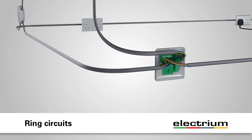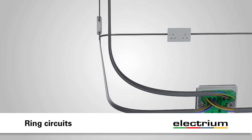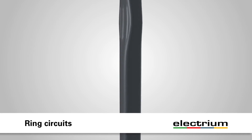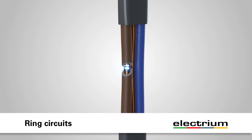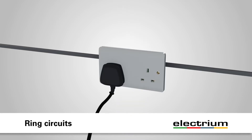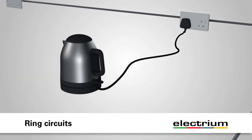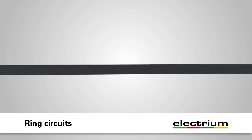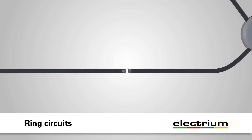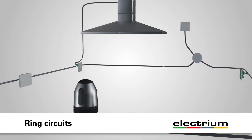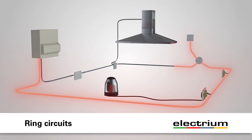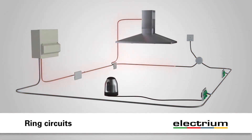Serial arc faults can only occur in the radial connections to the ring, such as spurs, appliance leads, and extension leads from socket outlets. AFDDs will detect arc faults wherever they can occur in or attached to ring circuits. A broken ring becomes two radial circuits, and both serial and parallel arc faults can occur in these radial circuits.